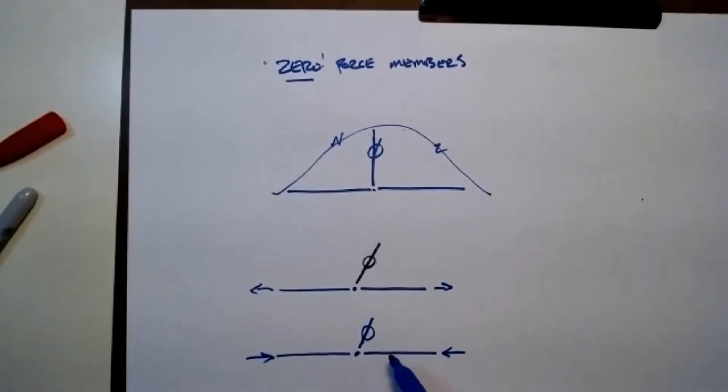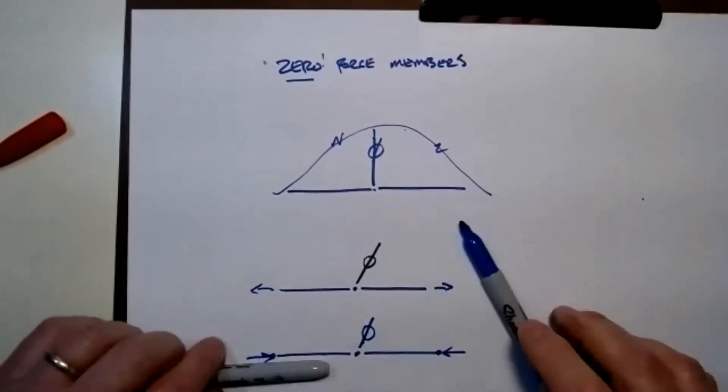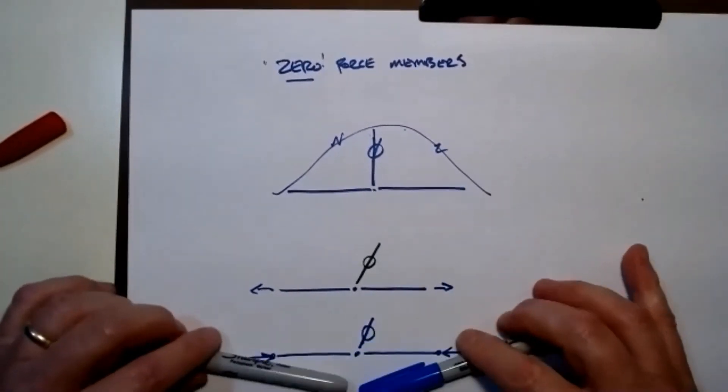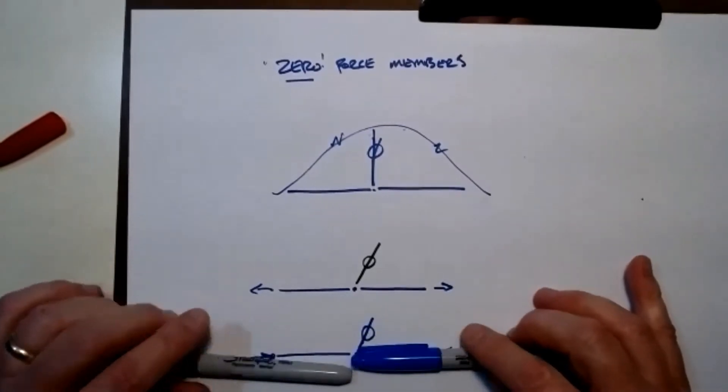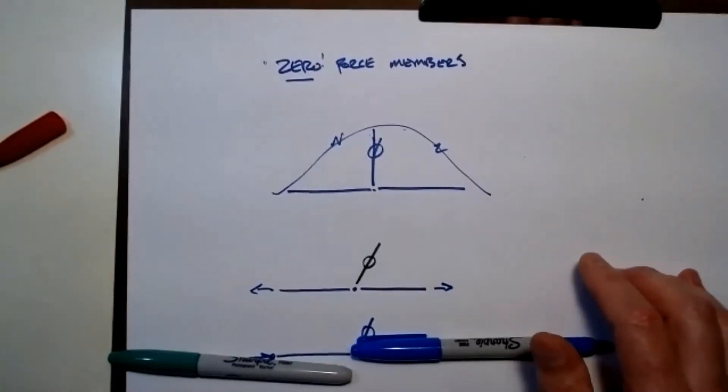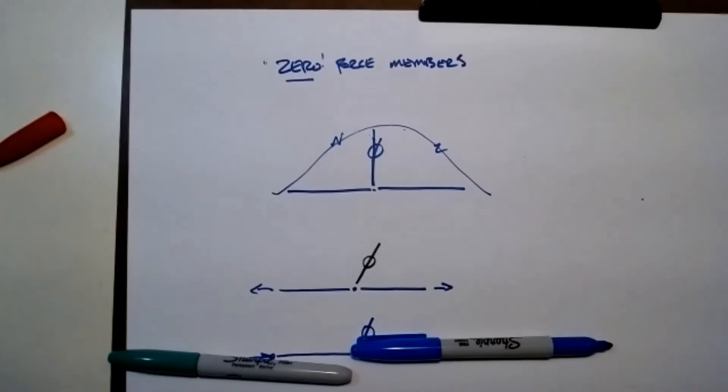Another way of looking at it is that all these are pin connected members. If there is a force here, these two members don't give any resistance to that force, so it ends up finding another path within the system to be resolved.